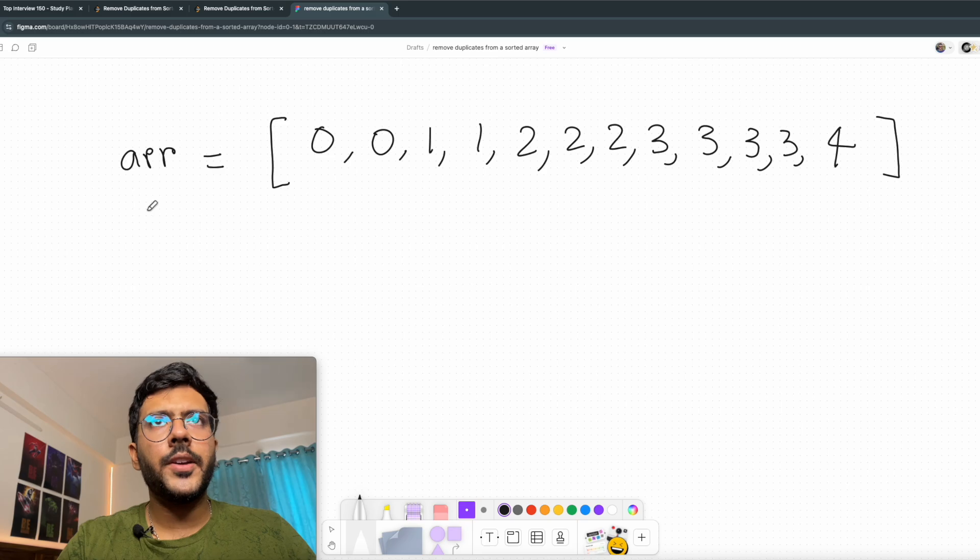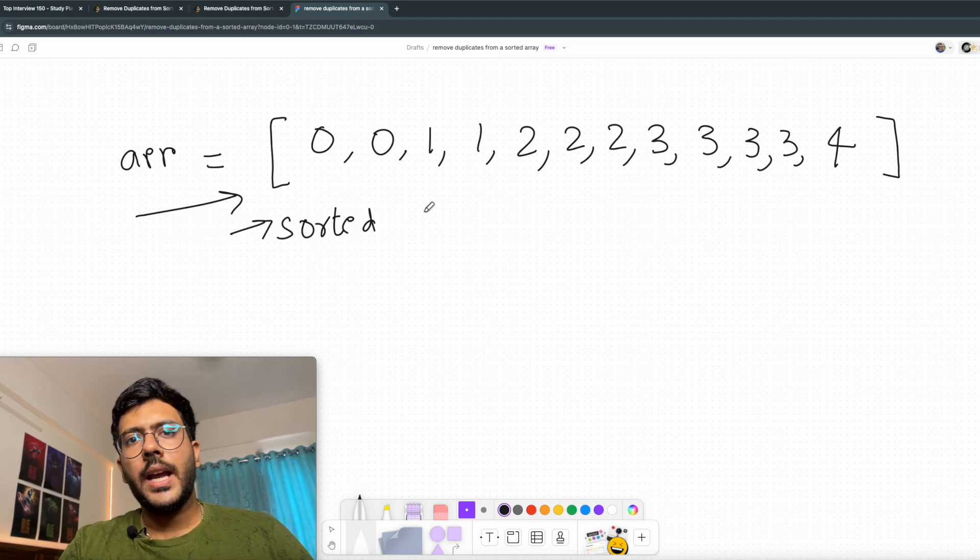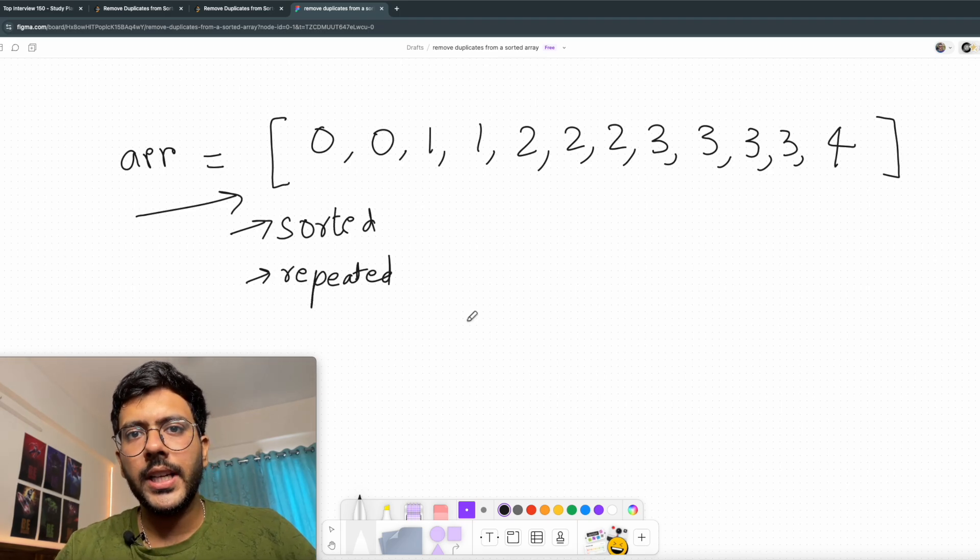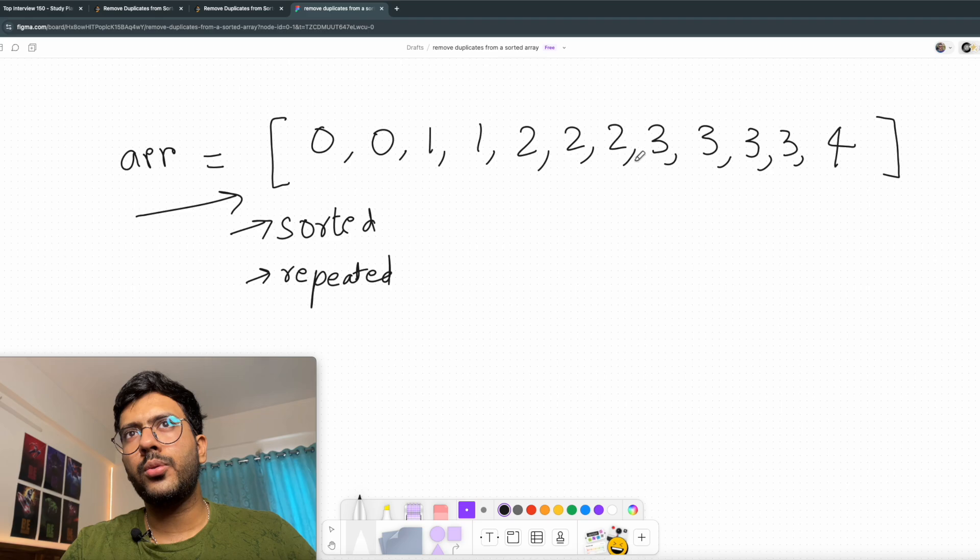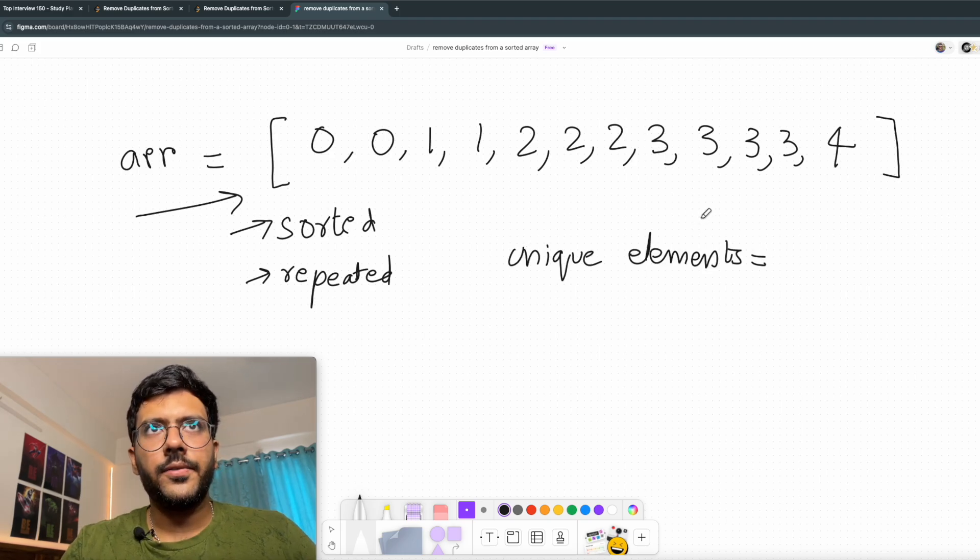The problem states that I am given an array with certain conditions. The array will be in increasing order, it will be a sorted array, and I know that the array has repeated elements. I need to find the number of unique elements in this array. For example, you can see this array 0, 0, 1, 1, 2, 2, 2, 3, 3, 3, 4. I need to find out the number of unique elements and for this it is 5. I have 5 unique elements.